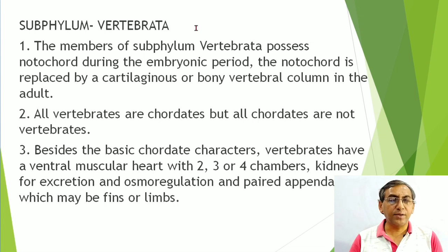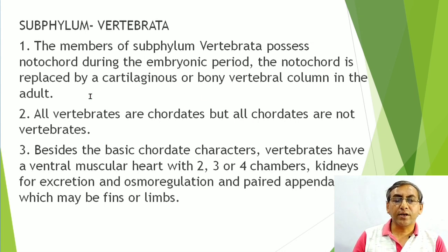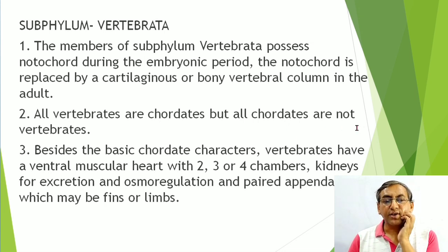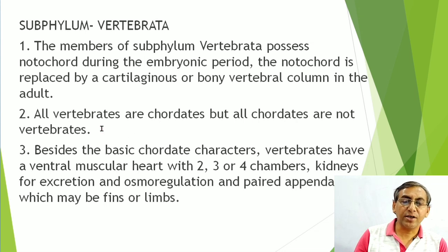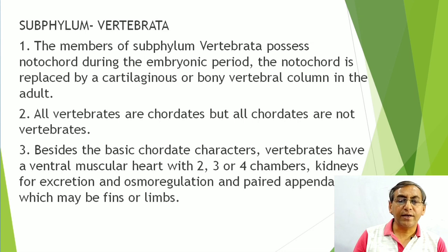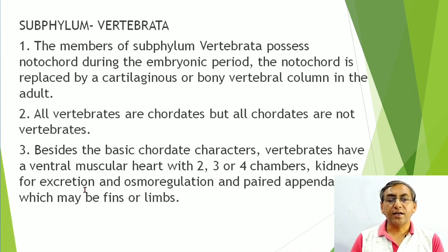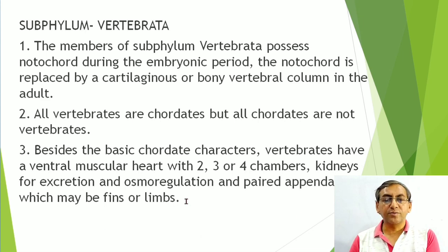Subphylum Vertebrata: the notochord is converted into the vertebral column (cartilaginous or bony) in the adult. All vertebrates are chordates, but not all chordates are vertebrates — because in non-vertebrate chordates (Urochordata, Cephalochordata) the vertebral column is absent. Besides basic chordate characters, vertebrates have a ventro-muscular heart (2-, 3-, or 4-chambered), kidneys for excretion and osmoregulation, and paired appendages (fins or limbs).